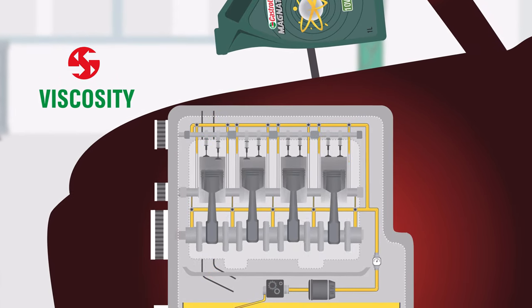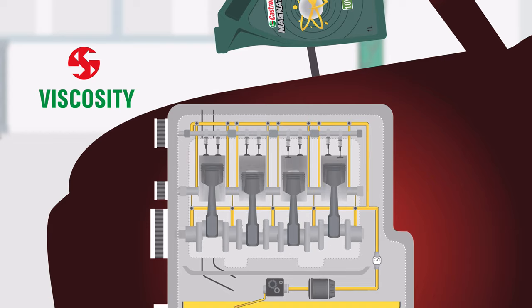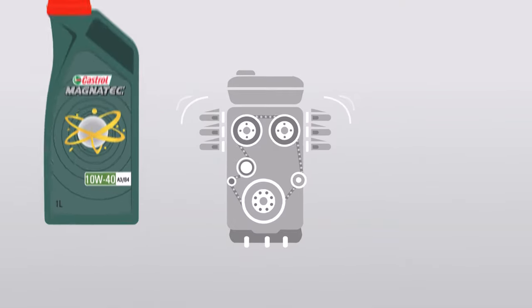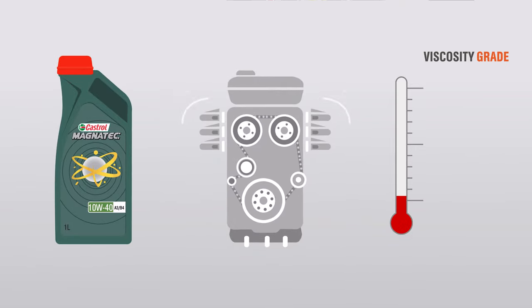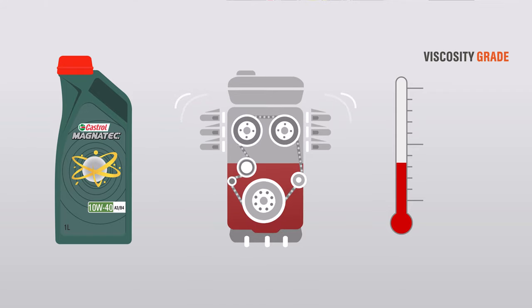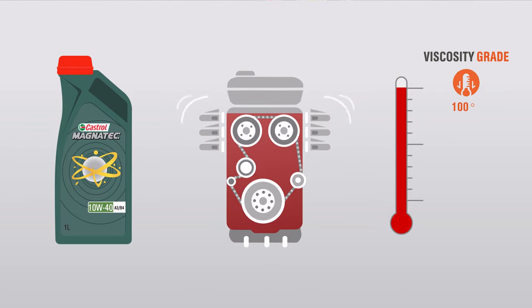Because the resistance to flow — the oil grade — of any liquid differs at any given temperature, the SAE decided to measure the grade at 100 degrees Celsius, roughly the standard operating temperature of an engine.